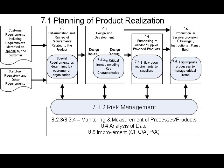As you can see on this diagram, the risk management process really begins with the determination and review of requirements related to the product. It continues through the design and development process if applicable to your organization — things like critical items including key characteristics. Then on to the purchasing and vendor supplier requirements, looking at the flow-out of those requirements to suppliers, then on to production and service provision. So this risk management process spans the entire organization.